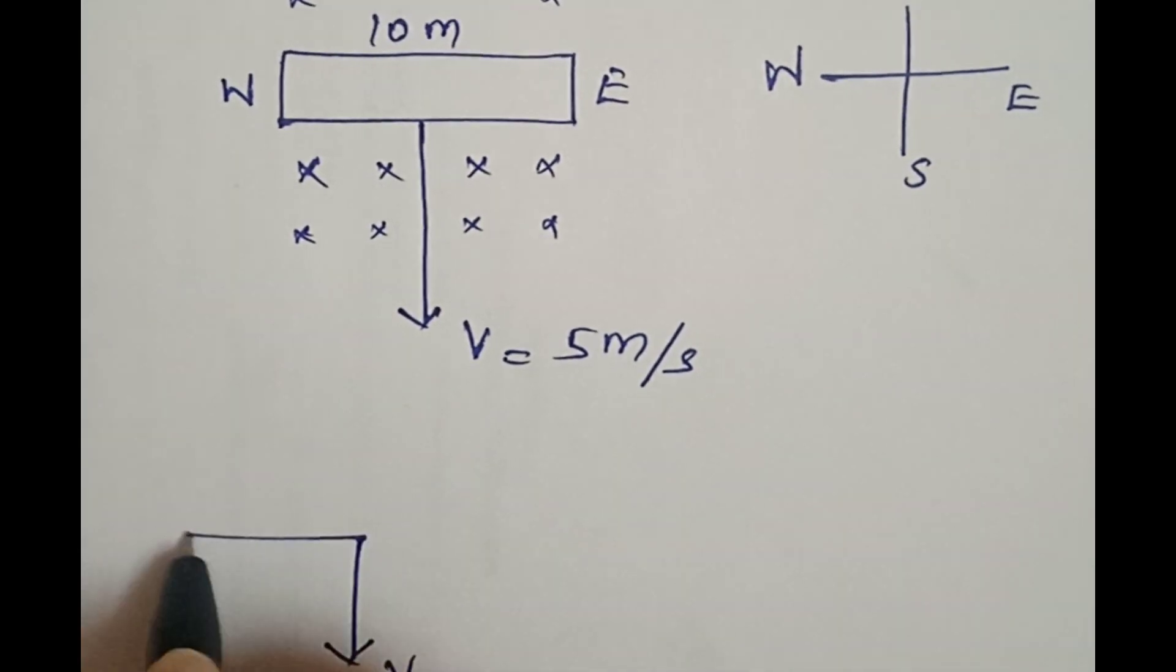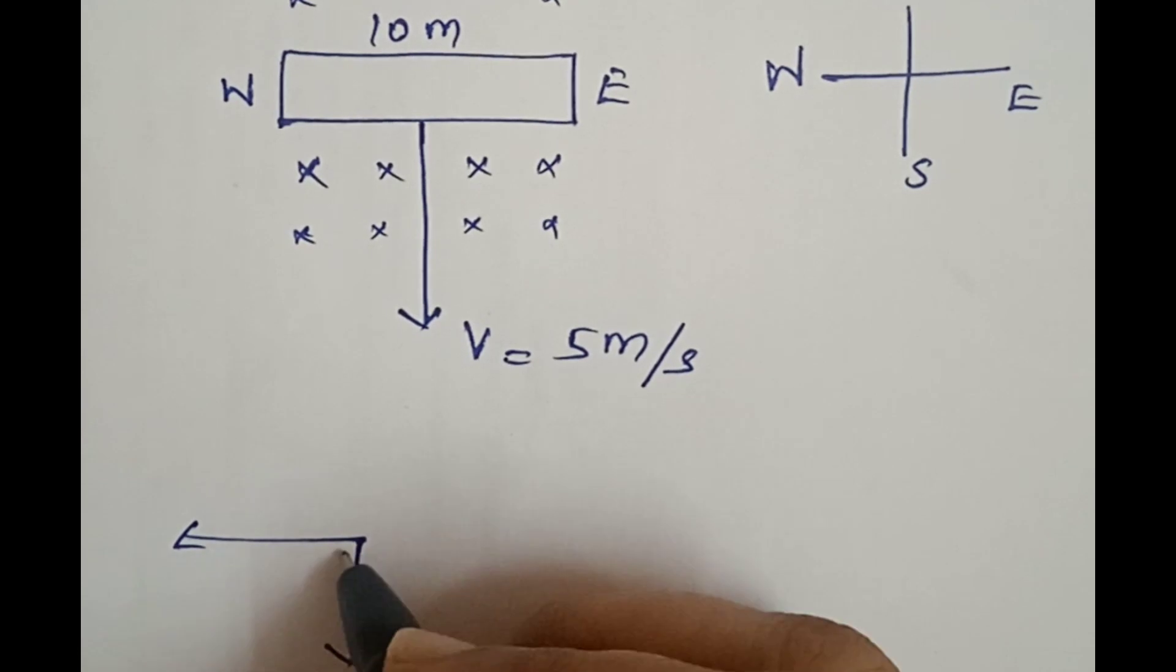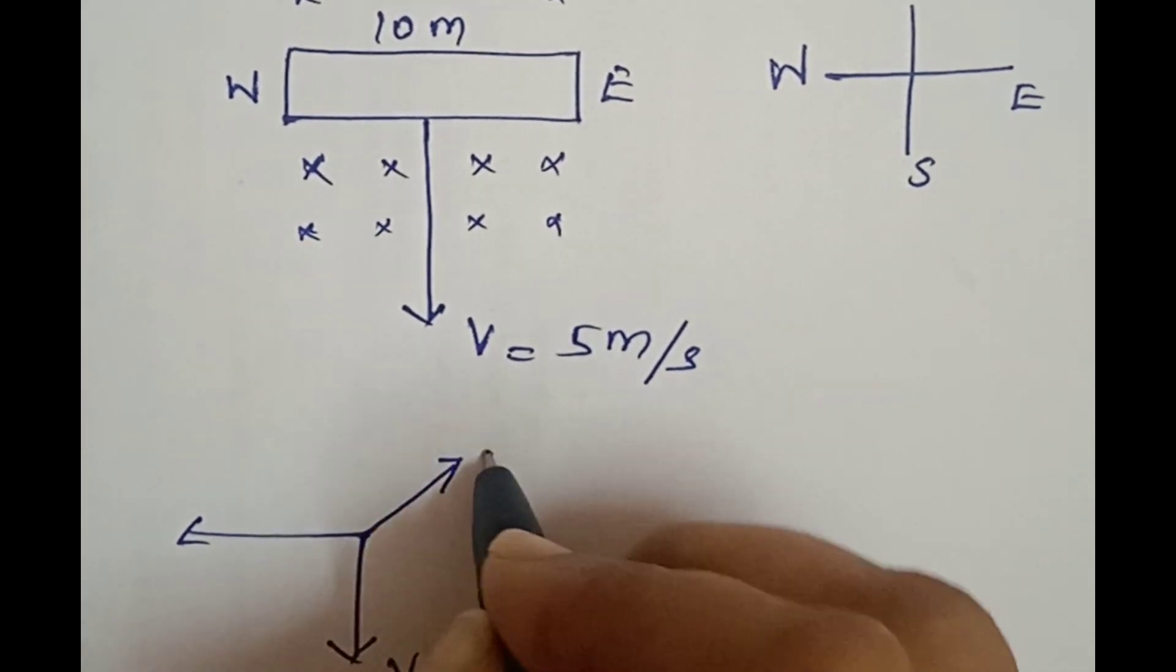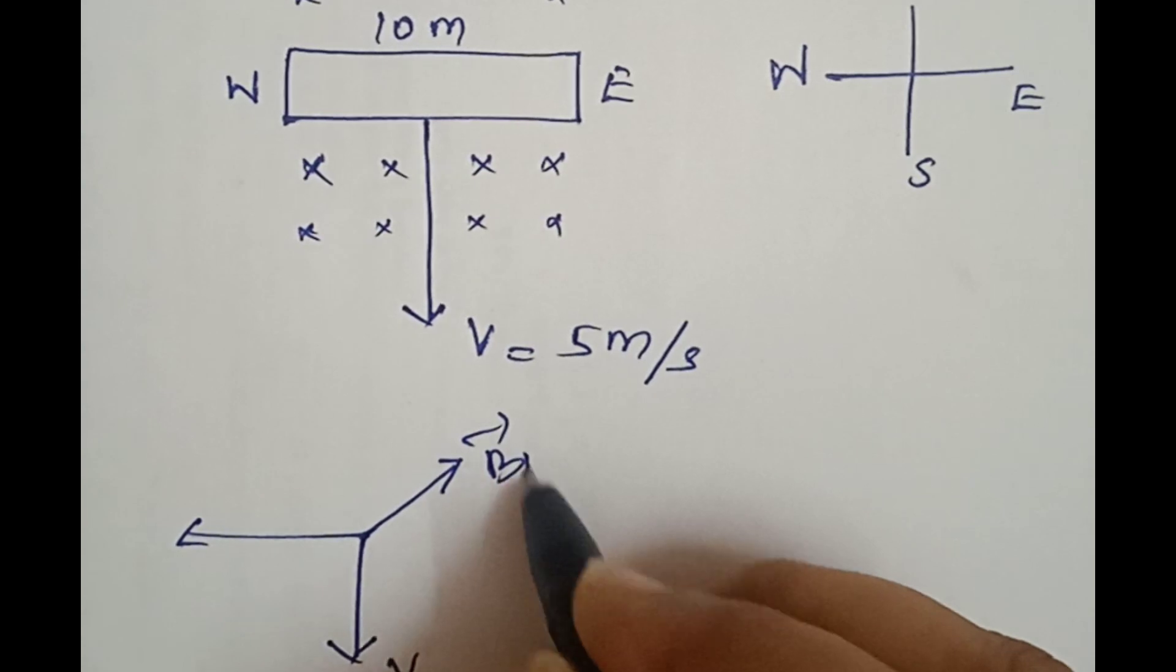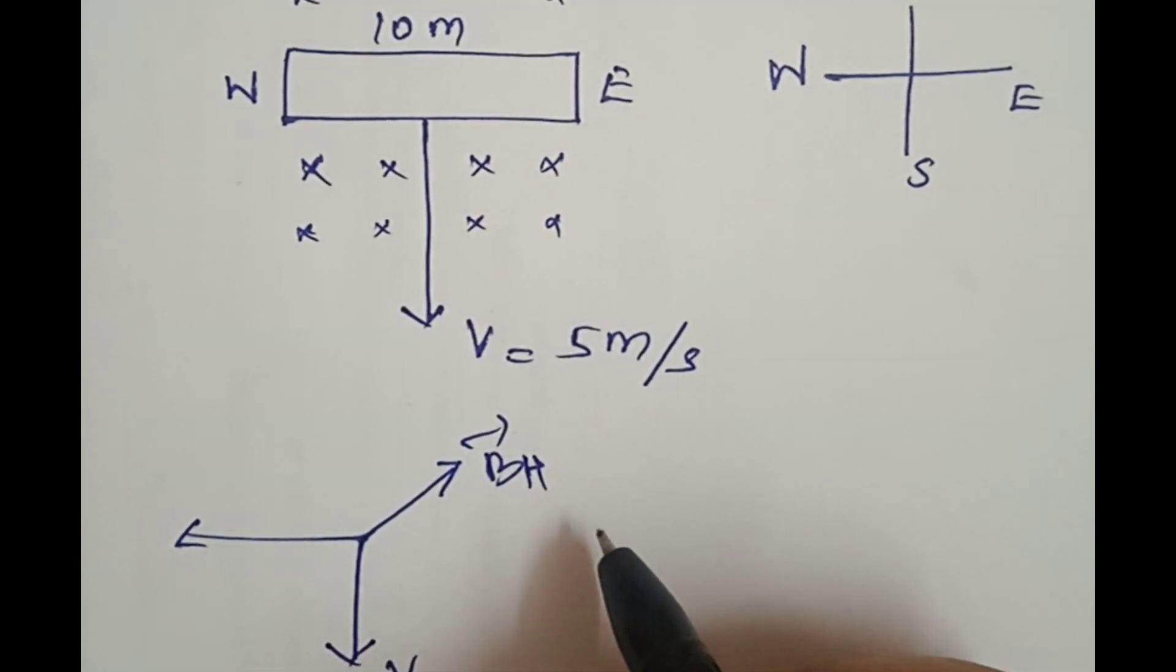What do we use? Fleming's right-hand rule is used. Induced current will be induced. Induced EMF will be induced.